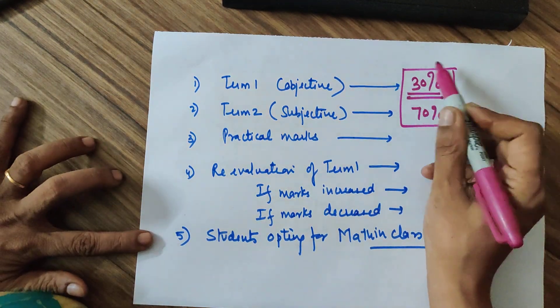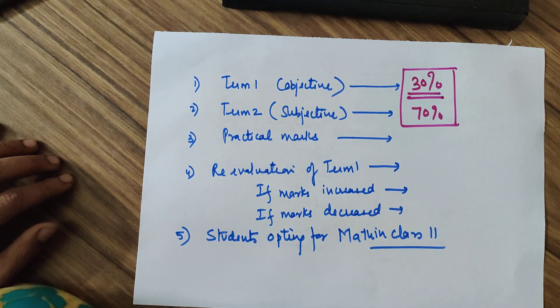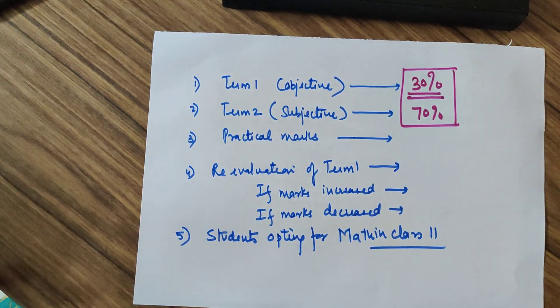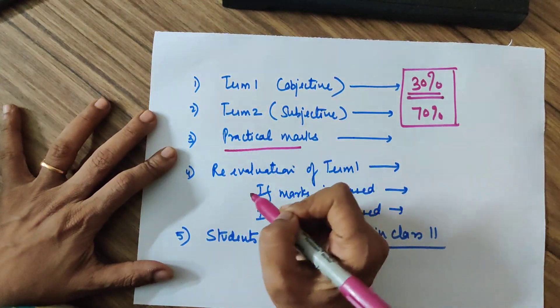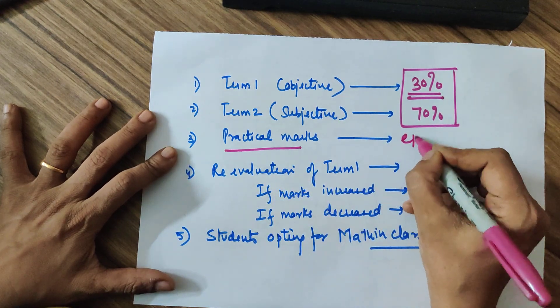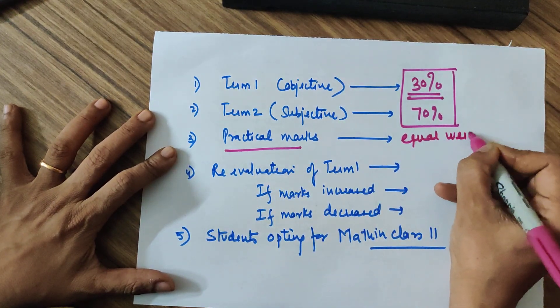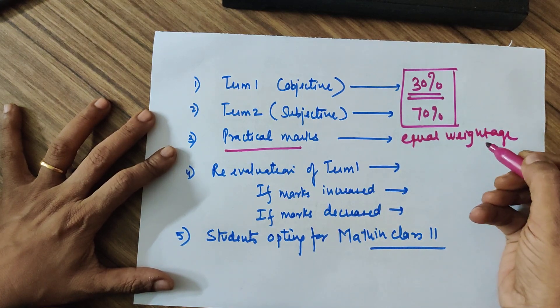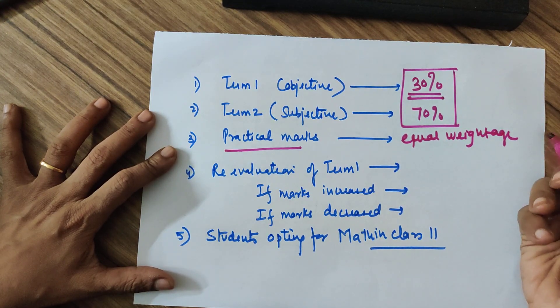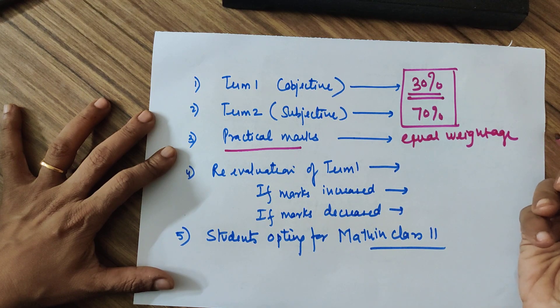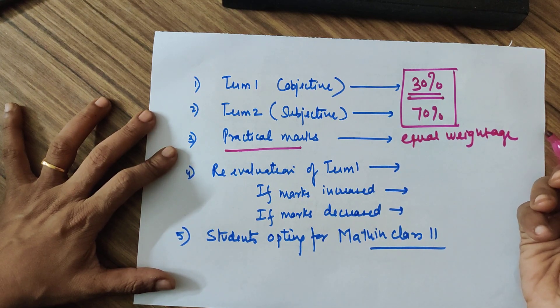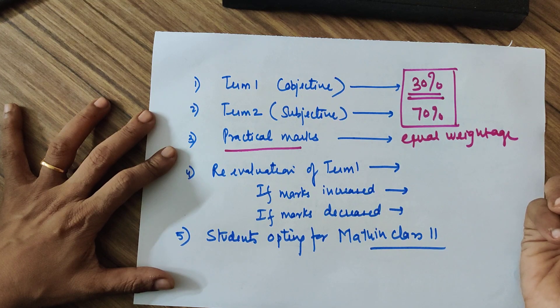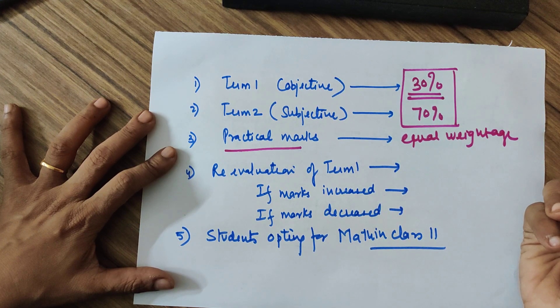Term 1 ki weightage bahut kam hai as compared to Term 2. Apart from that, practical exam ke marks ka kya hua? It has equal weightage. Jo aap ke marks Term 1 mein aaye thay aur Term 2 mein aaye thay, dono ki weightage barabar rakhi gayi hai. If Term 1 mein 15 marks thay and Term 2 mein 15 marks thay, dono ko add karke 30 marks ke practical ke marks hain. No change in the weightage.